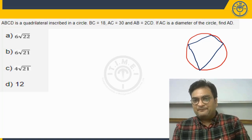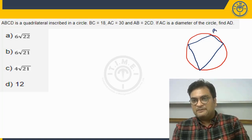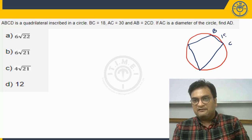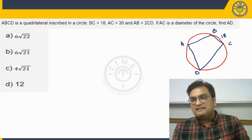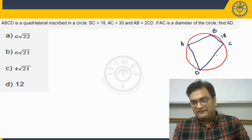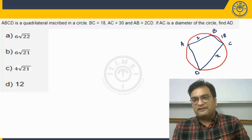BC is given to be 18. Let us say this is B, this is C, this is 18. AC is also given, it is 30. And this is D. AB is twice of CD. So if this is some x, AB will be 2x.